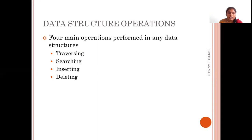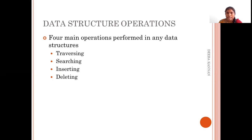Traversal is visiting each and every node only once. Searching means finding whether a particular data is present in the data structure or not — we start from the starting node and check if that particular element is available. Insertion is when you want to insert a new record into the existing data structure. Deletion is when you want to delete a record with a particular data.